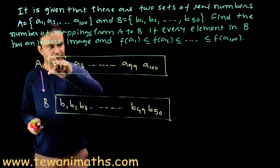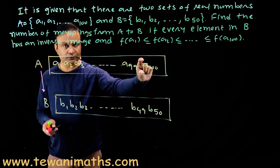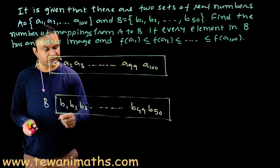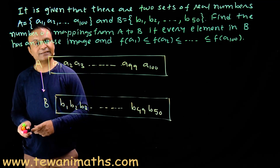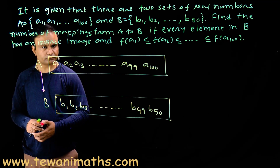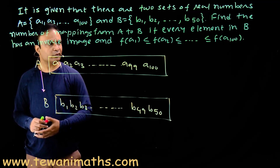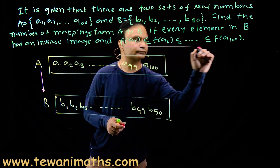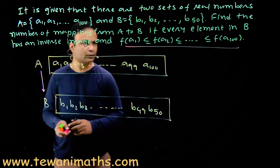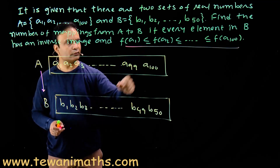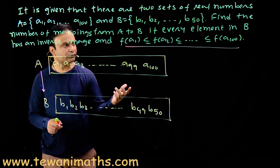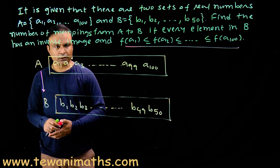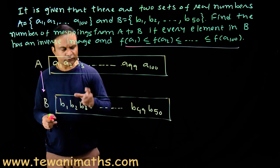Here we have 100 pre-images and only 50 images, which means the function is many-one. Now we have to find the number of mappings under this condition. We have to maintain the order of values f(A₁), f(A₂), ..., f(A₁₀₀).